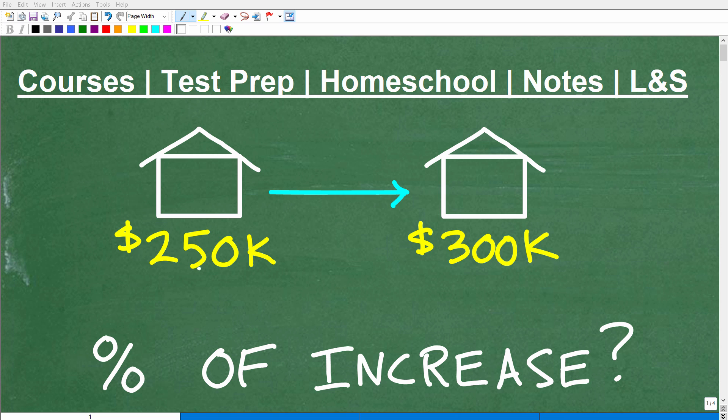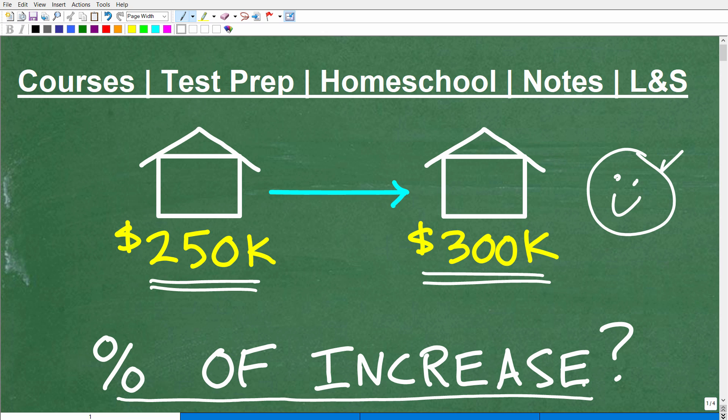Okay, so what's going on here? Well, we have this home and the value of this home is $250,000. And over time, this home went up to $300,000. So that particular homeowner is pretty happy about that. They're saying yes, awesome, my home went up. But how much did that person's home go up? What was the percent of increase in the value of their home? That is the kind of focus of this particular video.